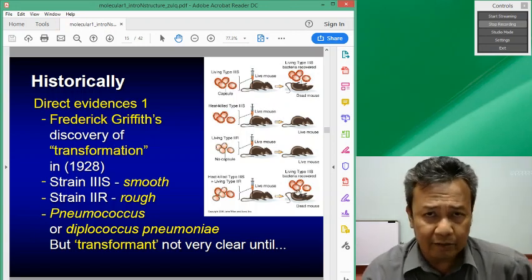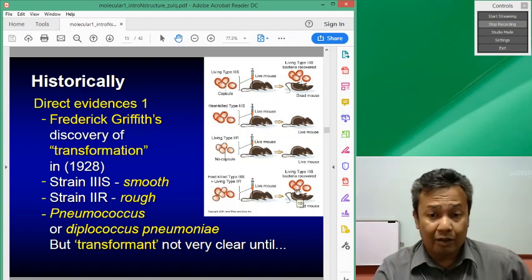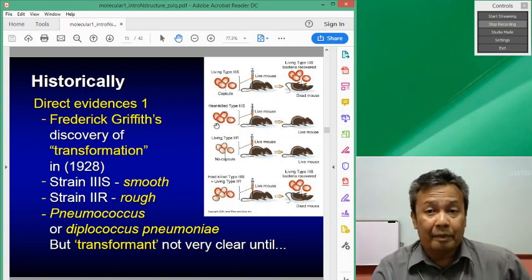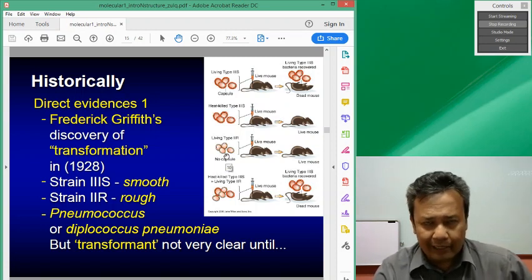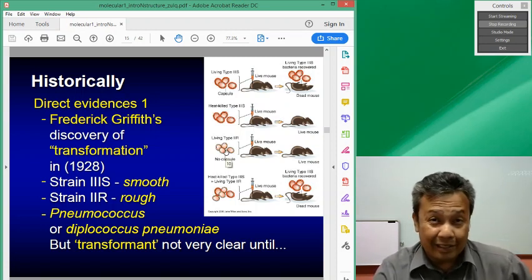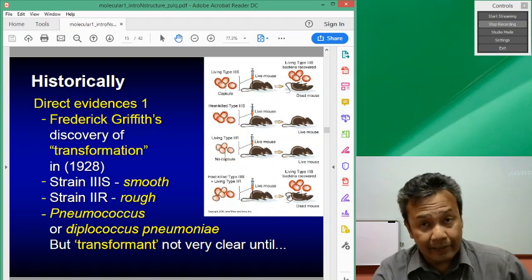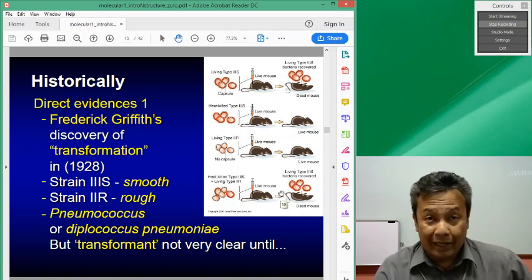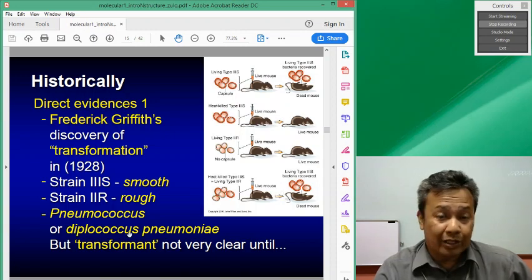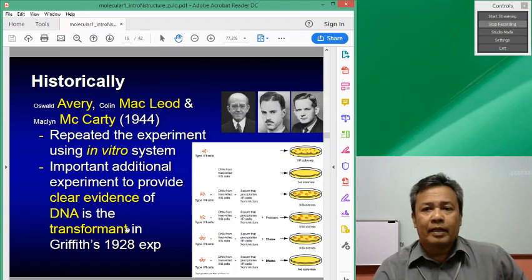So this gives birth to the phenomenon of transformation. For some reason that wasn't clear at that time, the 2R have been transformed into 3S. Although they do not yet know what the mechanism and what's involved, they call it transformant.